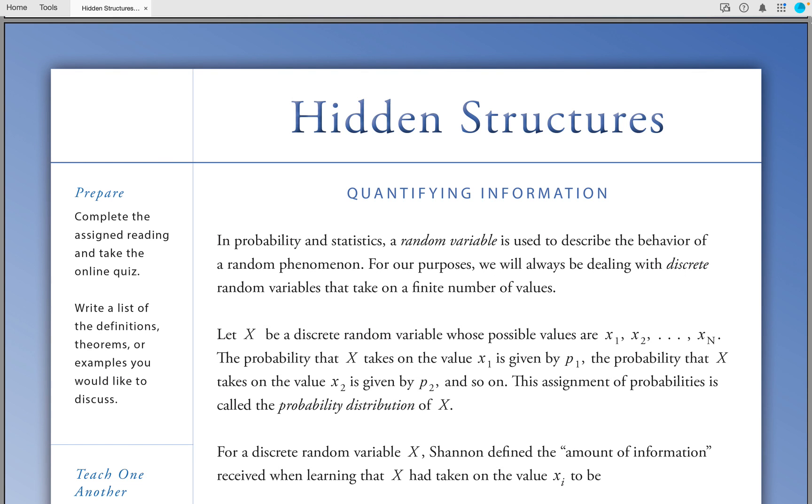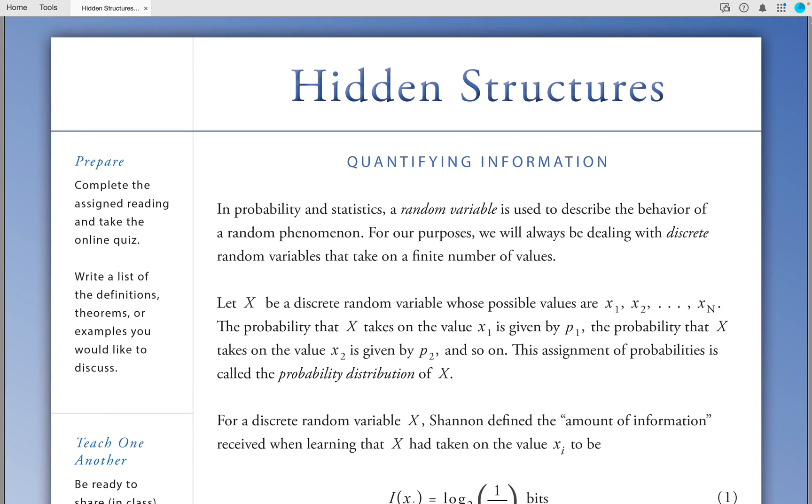Quantifying Information. In probability and statistics, a random variable is used to describe the behavior of a random phenomenon. For our purposes, we will always be dealing with discrete random variables that take on a finite number of values. Let X be a discrete random variable whose possible values are X sub 1, X sub 2, up to X sub n. The probability that X takes on the value X sub 1 is given by P sub 1. The probability that X takes on the value X sub 2 is given by P sub 2, and so on. This assignment of probabilities is called a probability distribution of the random variable X.